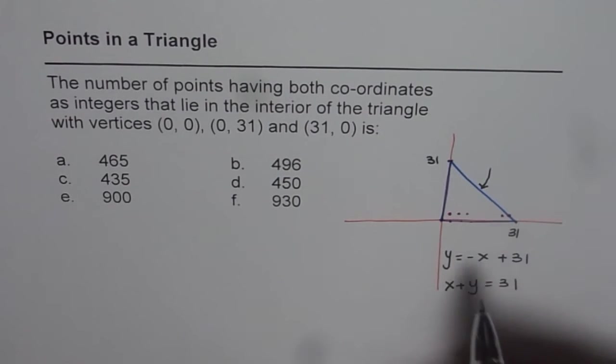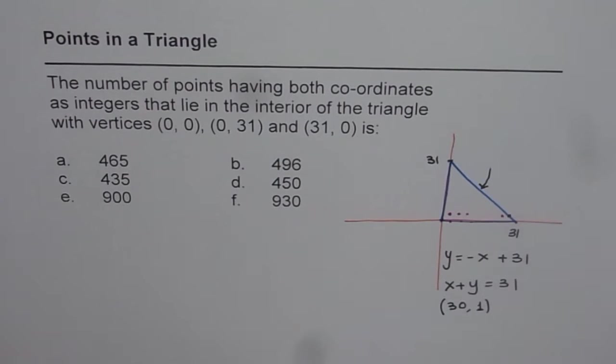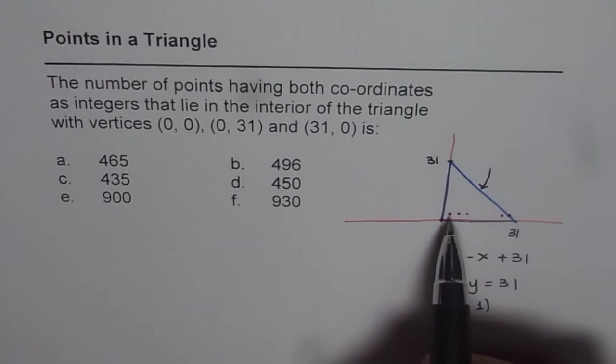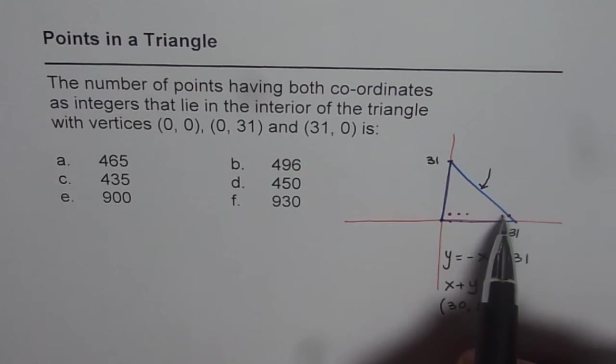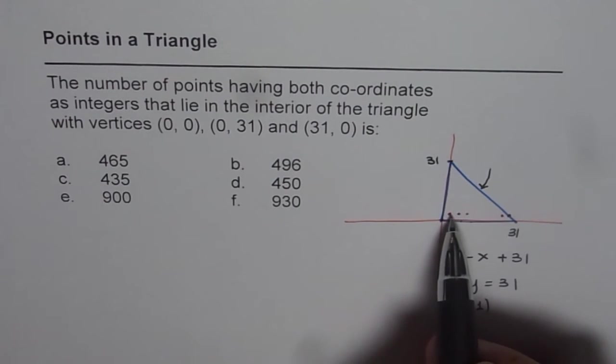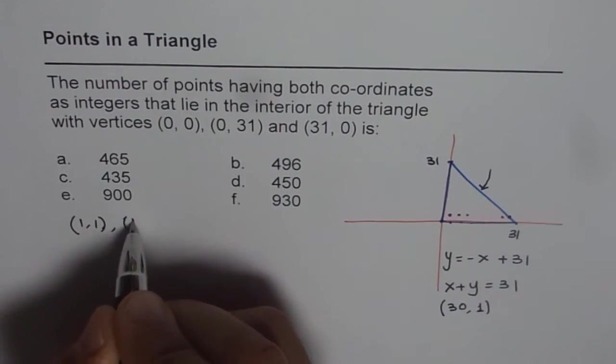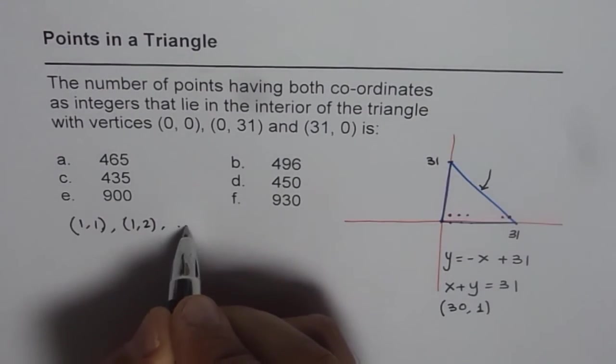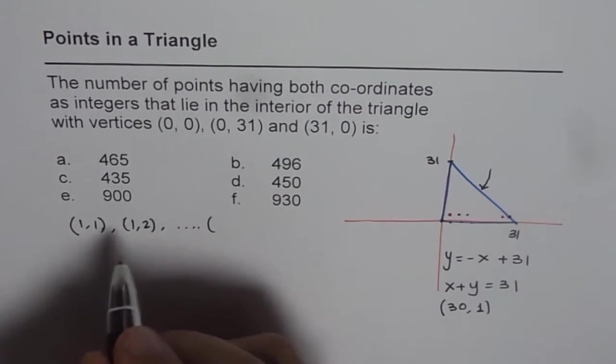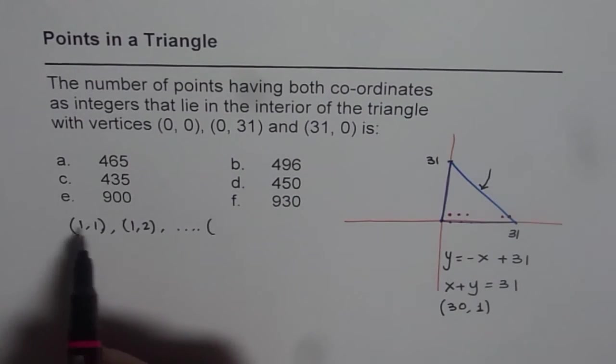If my coordinate point is 30 for x then y will be 1 and this point will lie on the hypotenuse. So how many points do I have inside in the very first row? I have 29 points starting from (1,1), (2,1). Well let me say now vertical points since I wrote 1.